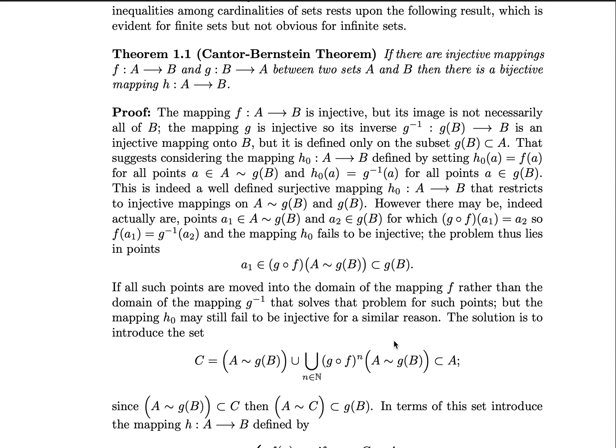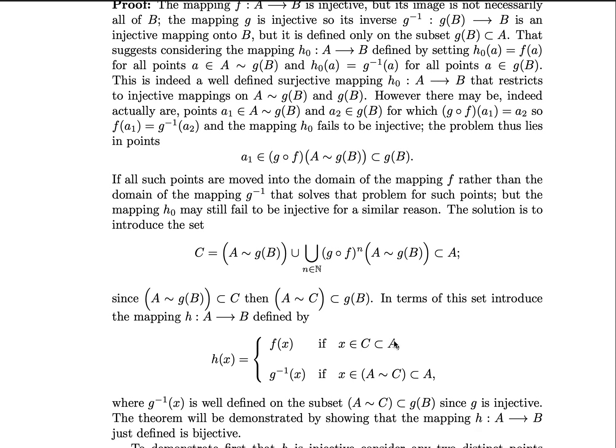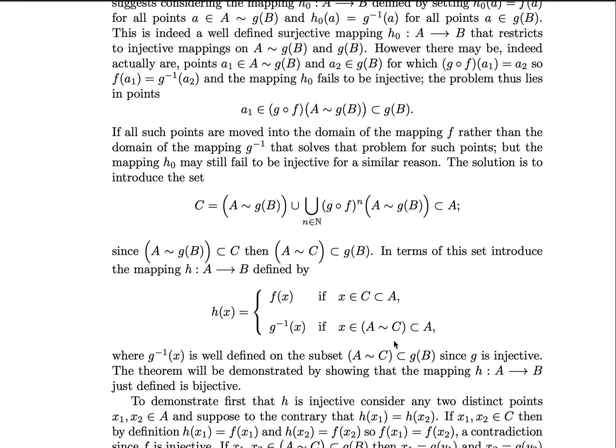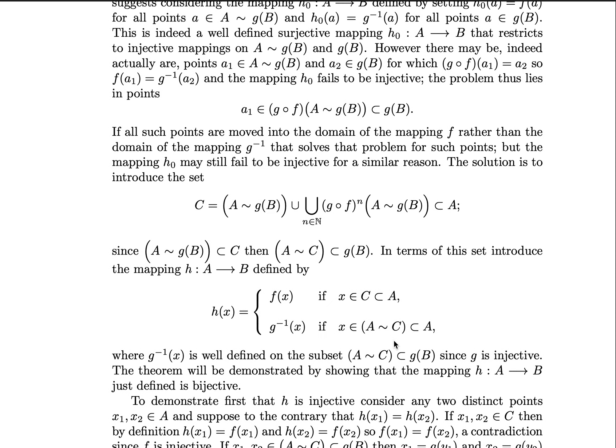The solution is to introduce, because you can continue iterating this problem forwards, the set C, which is equal to all those points A that are not in g(B), unioned with a large union. So we consider all of those points such that any iteration of g ∘ f, so (g ∘ f)ⁿ,